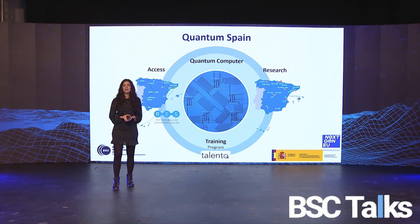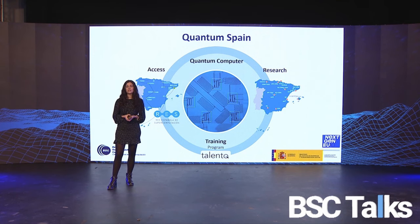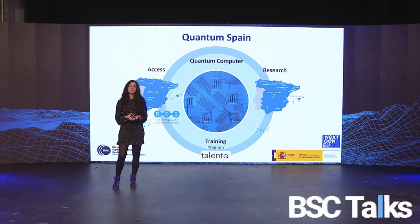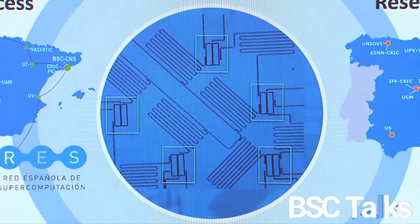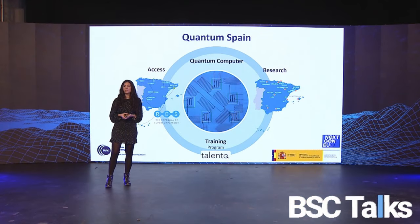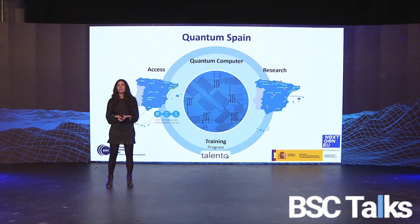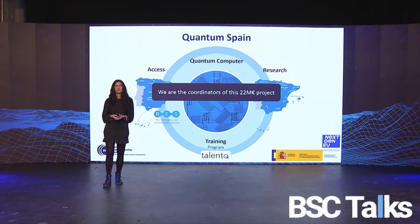This is the context for Quantum Spain — a 22 million euro project funded by the government of Spain through the Next Generation Funds. The goal is to install a quantum computer at BSC facilities, with access managed by the Spanish Supercomputing Network. On top of that, different research groups will work on developing new quantum algorithms and exploring applications, particularly in artificial intelligence. There will also be a training program to bring this kind of computation to people from different backgrounds. BSC is the coordinator, meaning we will host the first South European quantum computer in our center.